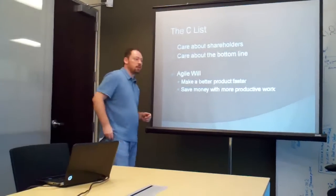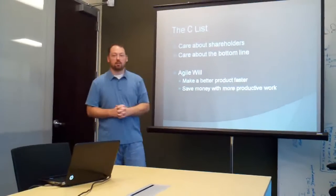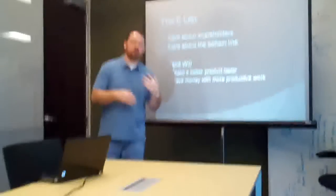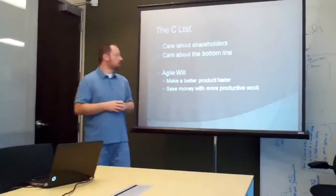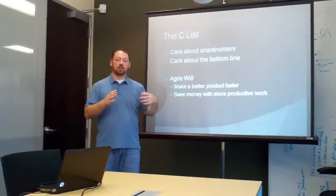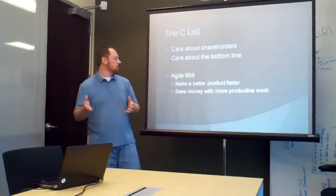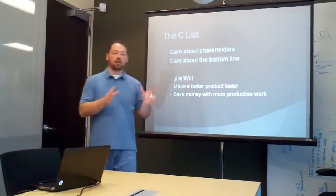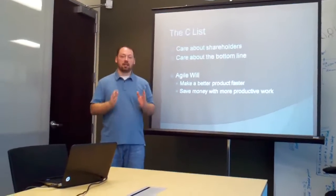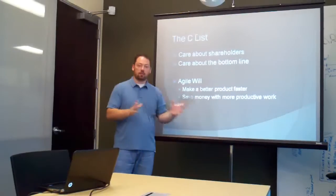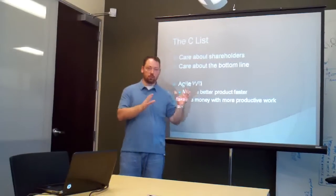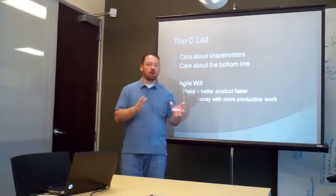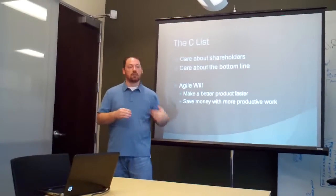When talking about the C-list, what motivates them? More often than not, they care about shareholders. They're there to create value and increase the company's wealth and profits — they care about the bottom line. How does Agile do this? Agile will make a better product faster. When talking to the CEO or CTO, that's what you say: Agile will help us make a better product in a shorter amount of time. At my previous company, I was trying to get upper management to realize we had a very definite problem with our waterfall approach of getting software out the door.